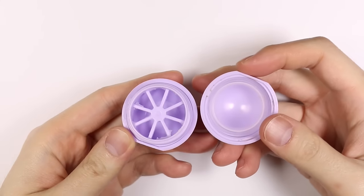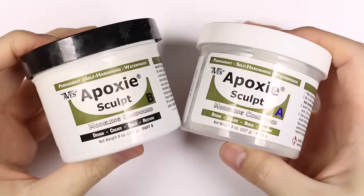The materials you'll need are an old EOS container, some two-part epoxy clay. I think air dry clay should work as well.